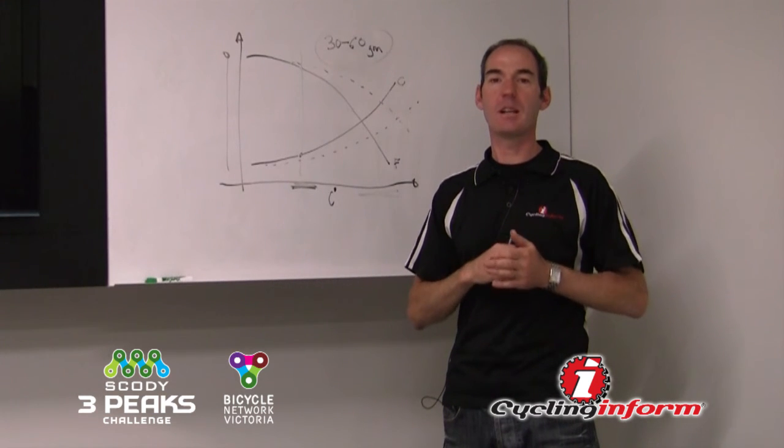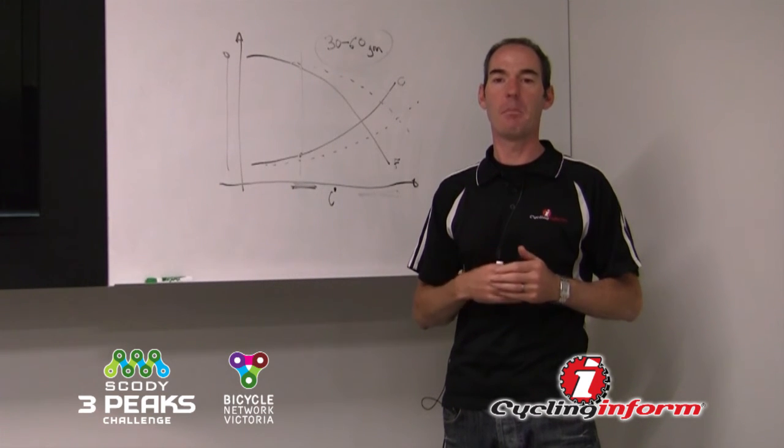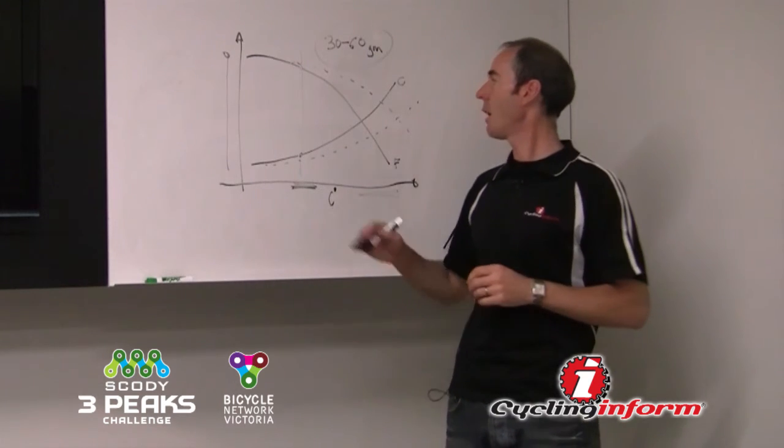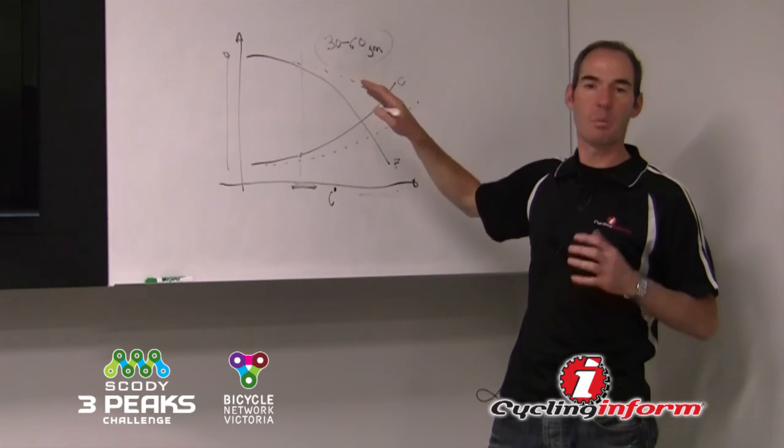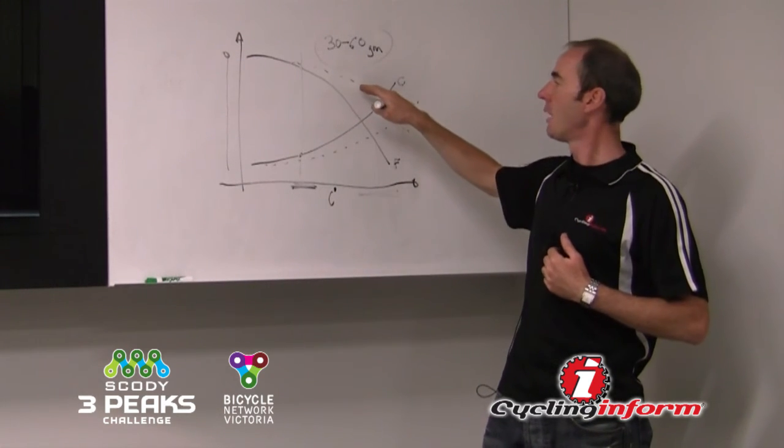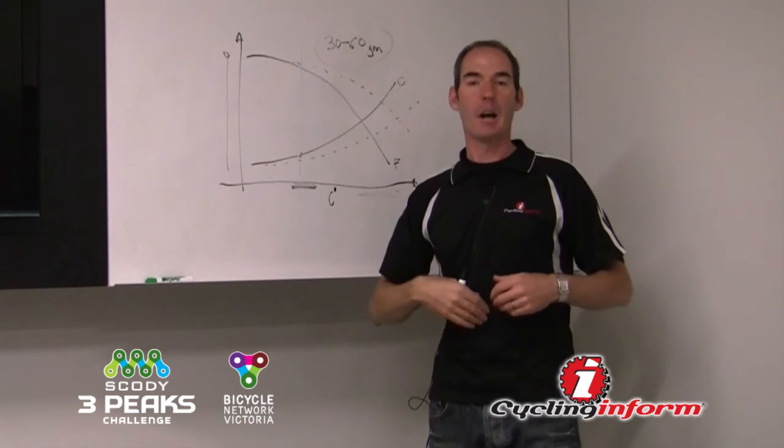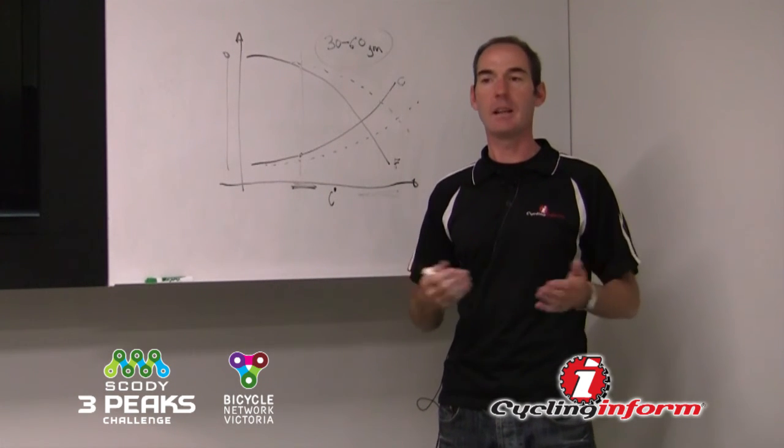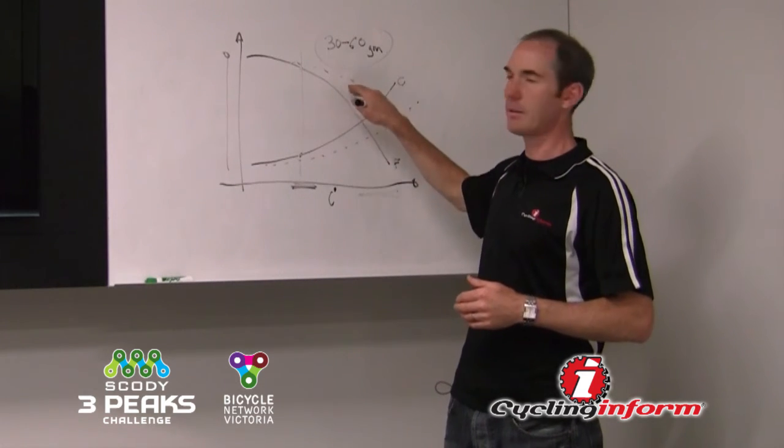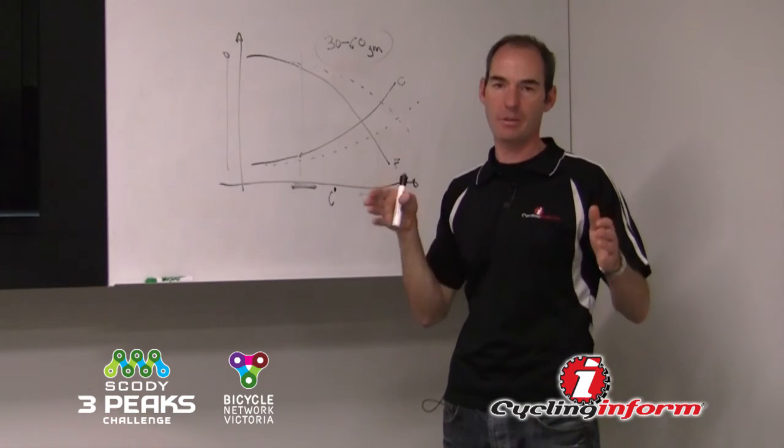But those sort of techniques help improve the metabolic efficiency, because what it's doing is helping improve the ability, your body's ability to be able to burn more fat to carbohydrate while you're out training. And then obviously, when you do the event, you're burning more fat to carbohydrate. So that's how we shift the curve.